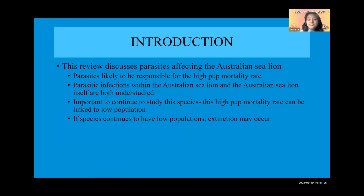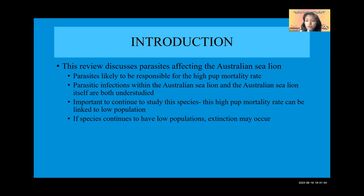This review discusses the parasites affecting the Australian sea lion population. These parasites are likely responsible for the high pup mortality rate. These parasitic infections are affecting the species so much that if we don't make efforts to bring the species back to normal populations, the species could go extinct — and these parasites and the pup mortality are likely contributing to this.